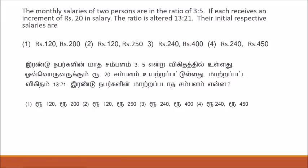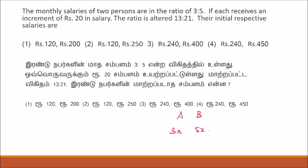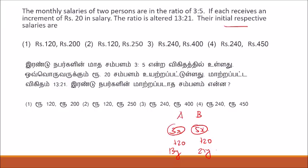Monthly salaries of two people are in the ratio 3 to 5 — so 3x and 5x. If each receives an increment of rupees 20, the ratio is altered to 13 to 21. Find their initial respective salaries. This is a shortcut method. We check the options: dividing by 3 gives 80, and 5 times 80 is 400. So we check if the option gives us the right values.